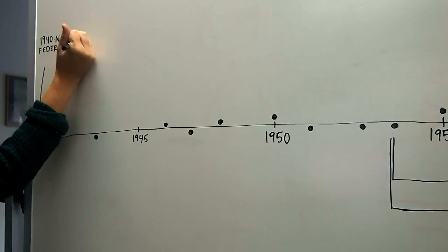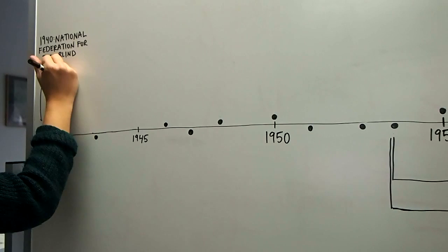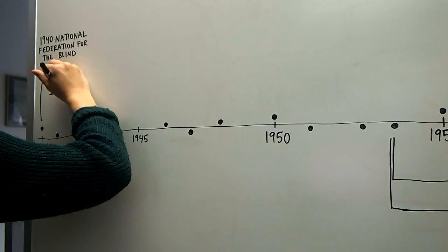In 1940, the National Federation for the Blind was formed to promote inclusion of the blind and visually impaired. They have a distinctive logo, and their original motto stated, you can live the life you want, blindness is not what holds you back.